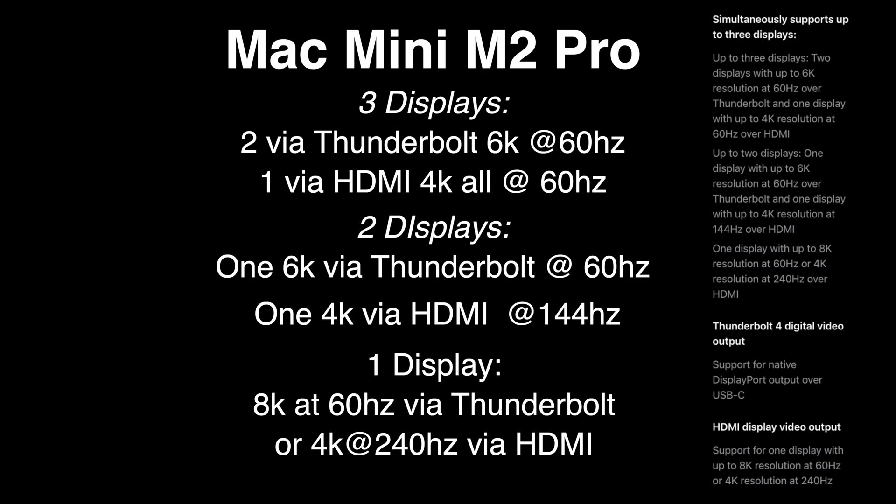Looking at the Mac Mini M2 Pro, you can run three displays: two via Thunderbolt at 6K 60Hz and one via HDMI at 4K 60Hz. Or two displays — one at 6K via Thunderbolt at 60Hz and one at 4K via HDMI at 144Hz. And it also supports one display at 8K 60Hz via Thunderbolt or 4K at 240Hz via HDMI.